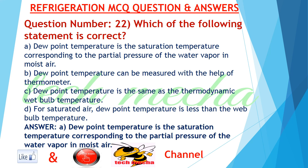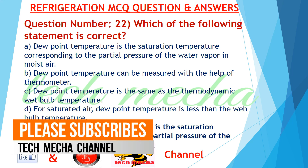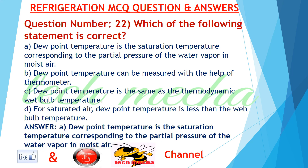Question number 22: Which of the following statements is correct? A. dew point temperature is the saturation temperature corresponding to the partial pressure of the water vapor in moist air, B. dew point temperature can be measured with the help of a thermometer, C. dew point temperature is the same as the thermodynamic wet bulb temperature, D. for saturated air, dew point temperature is less than the wet bulb temperature. Answer: A.